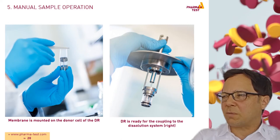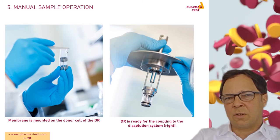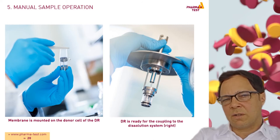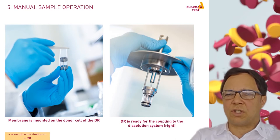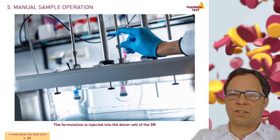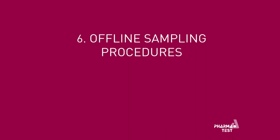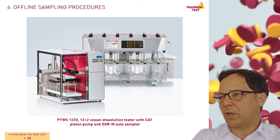The preparation of the dispersion releaser starts with the mounting of the membrane to the donor cell, which is shown on the left picture. When the membrane is mounted it will be closed by using O-rings. This donor cell will then be attached to the dispersion releaser. When the preparation is finished the dispersion releaser can be attached to the dissolution tester. We see here how the formulation can be injected into the donor cell. The sampling can be done manually with a syringe, offline with a pump and auto sampler, or online with a pump and spectrometer.